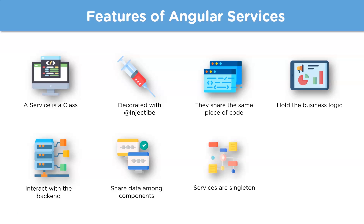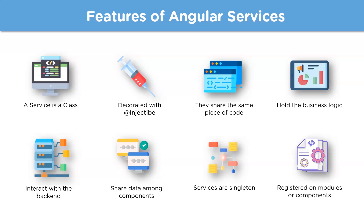In Angular, services are singletons, meaning only a single instance of a service gets created and that same instance is used by every building block in the application. A service can be registered as part of a module or as part of a component. To register it as part of the component, you'll have to specify it in the providers array of the module.